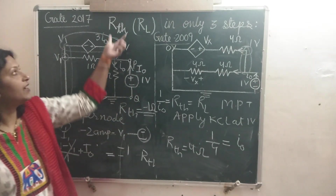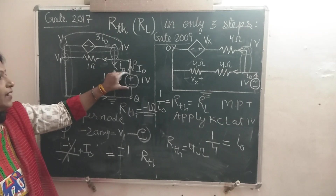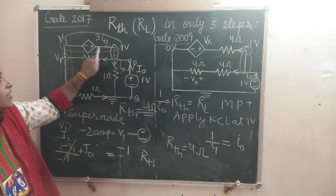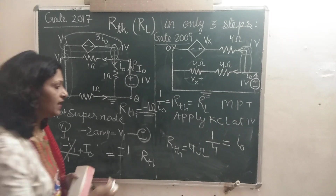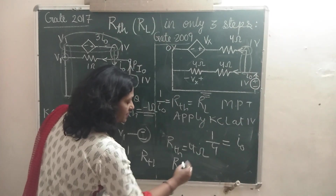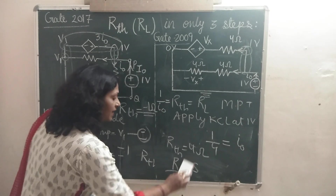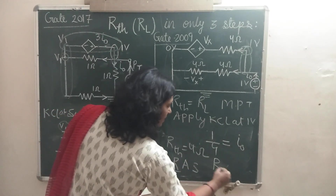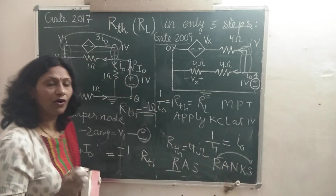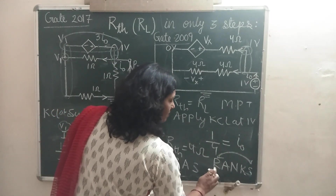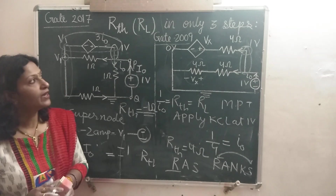This is the way to find RTH in just 3 or 4 steps using RANX: Replace independent sources, Add a test voltage or current (only needed when there are dependent sources), count Nodes and assign voltages, apply KCL, and Solve. If there are only independent sources, you only need Replace and Solve — just two steps. Thank you.